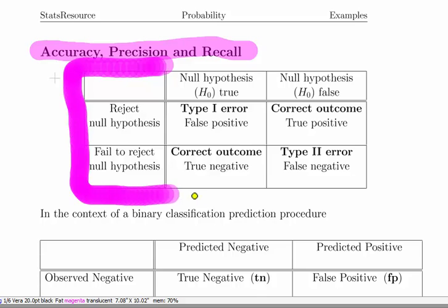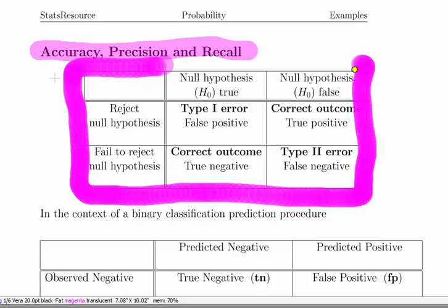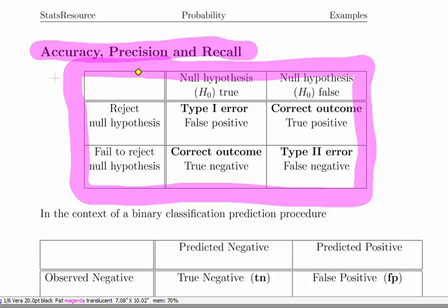Something to consider before we get into this is the idea of hypothesis testing. You perform a hypothesis test and you either reject the null hypothesis or fail to reject the null hypothesis. Sometimes the null hypothesis may be true but if you reject it you make a type 1 error. If the null hypothesis is false but you fail to reject it, that's called a type 2 error. Otherwise you're making correct conclusions.